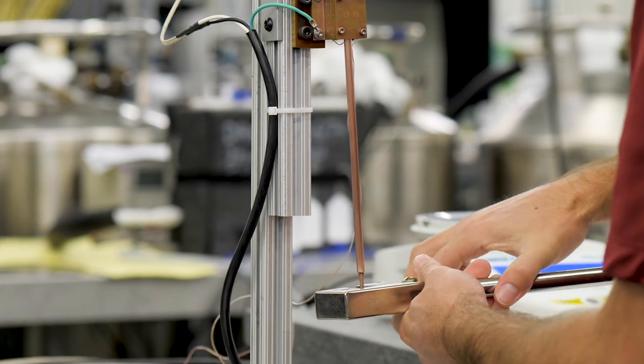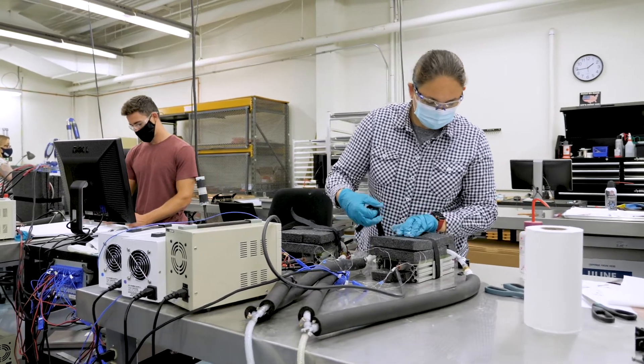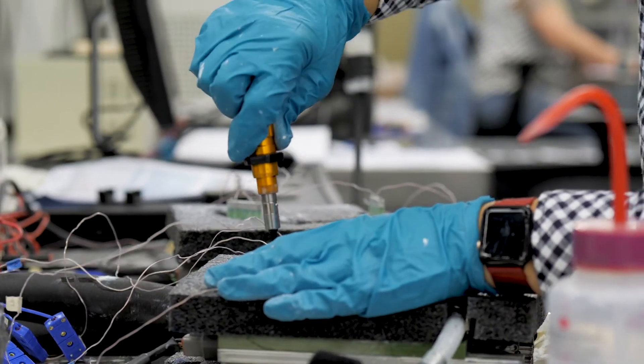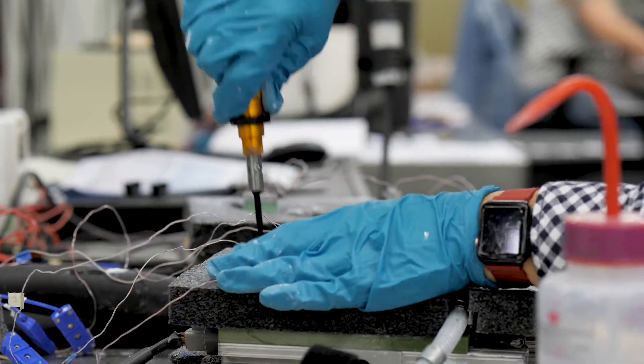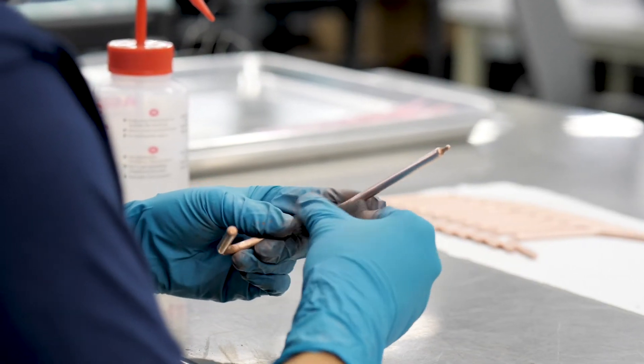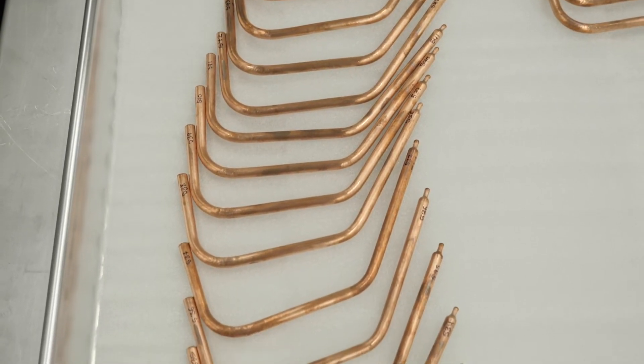The test regimen that a space copper water heat pipe sees is pretty extensive. There are constant quality checks throughout. We have some internal steps that we have. The customer defines some steps as well. At the end of the day the goal is to get a heat pipe that's reliable for 20 years and we have the test programs and know-how here to do that.